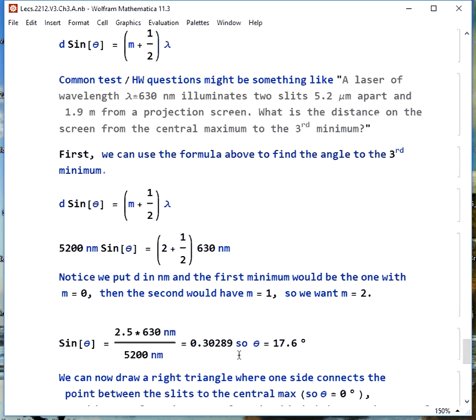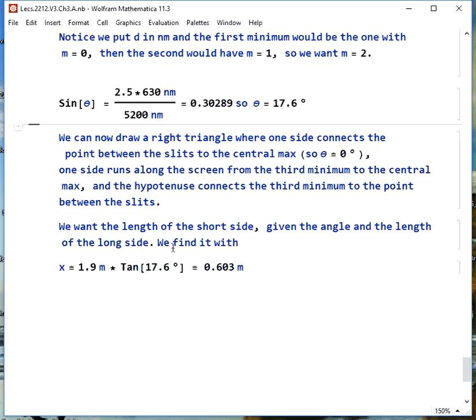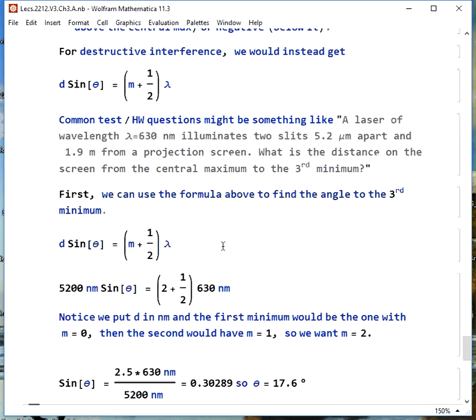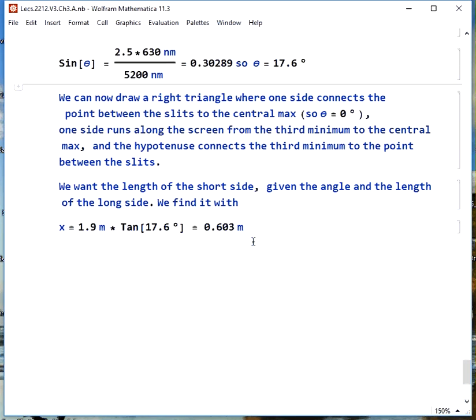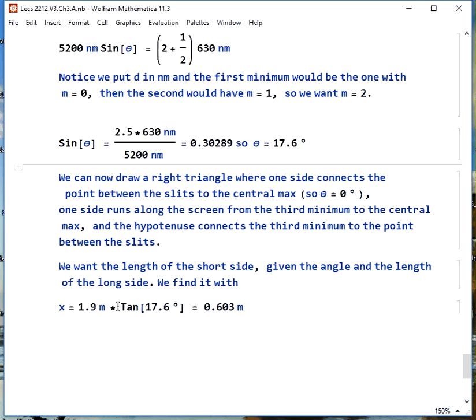We have all the numbers we need. We solve this, do the math, and we get 17.6 degrees. We can now draw a right triangle where one side is this dotted line, one side is this dashed line, and one side is this x that we want to know about. We know θ, we know the distance to the screen, so it's pretty simple math to figure out what x is. And all we have to do is x is 1.9 meters times the tangent of our angle, and in this case we get 0.603 meters.